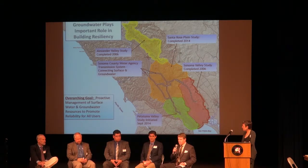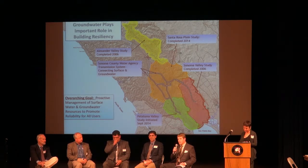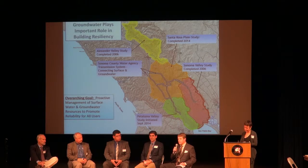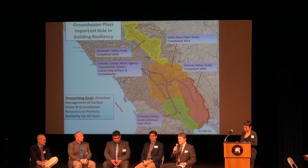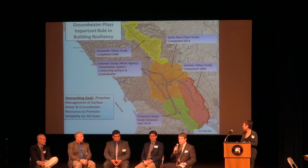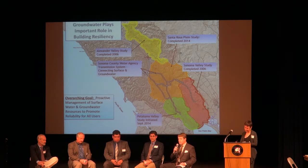IRWMPs are seen by some — and in some cases rightfully so — as just a shell organization to go after grant funds to implement your own pet projects. But at least within our IRWMP, and other IRWMPs are coming along too, there are approximately 50 throughout the state developing at different rates. Some are brand new, and some, like the Kings Basin Authority, have been around for a decade or more. Because we've been around longer, we've had more time to develop tools.